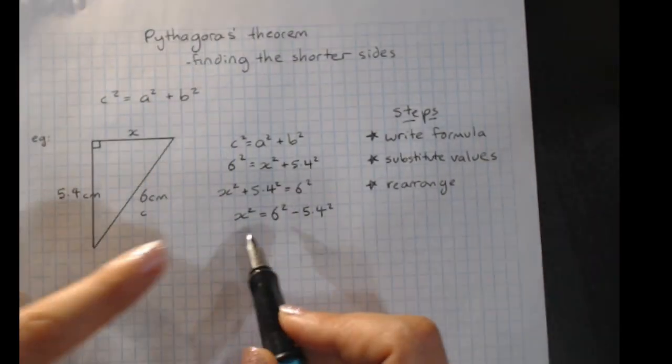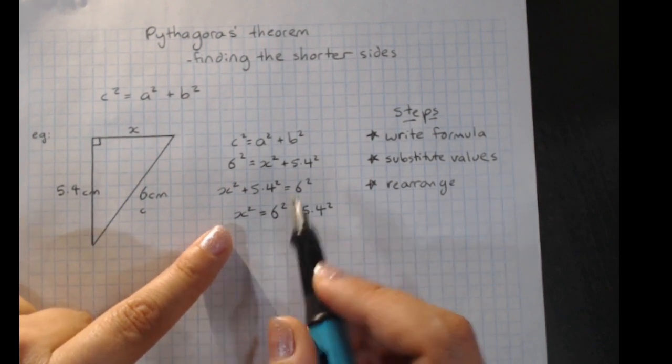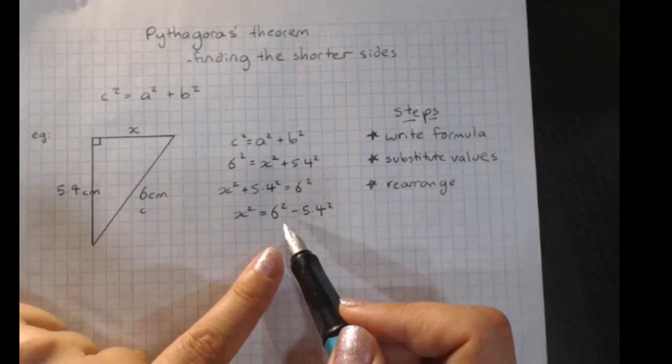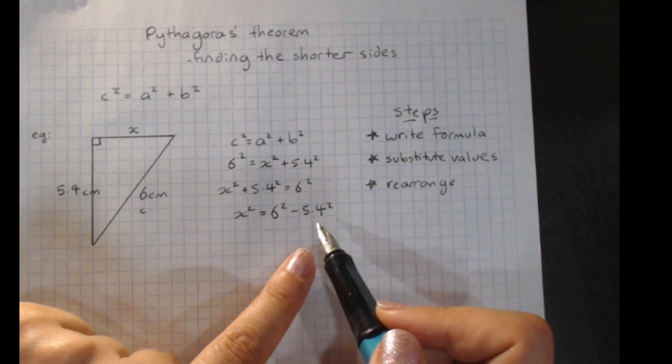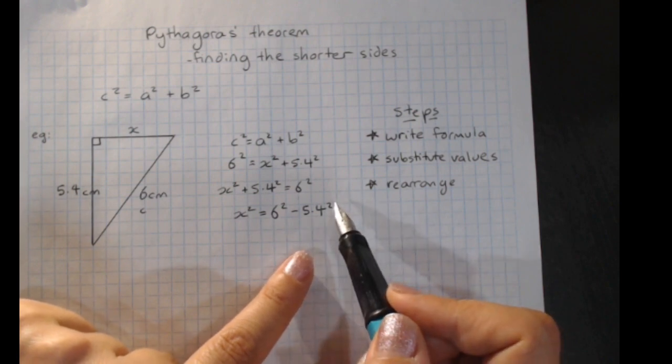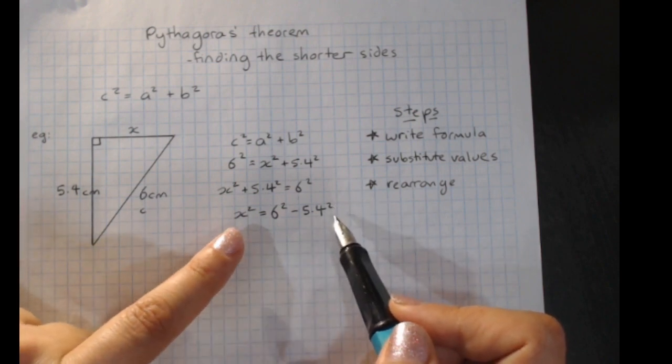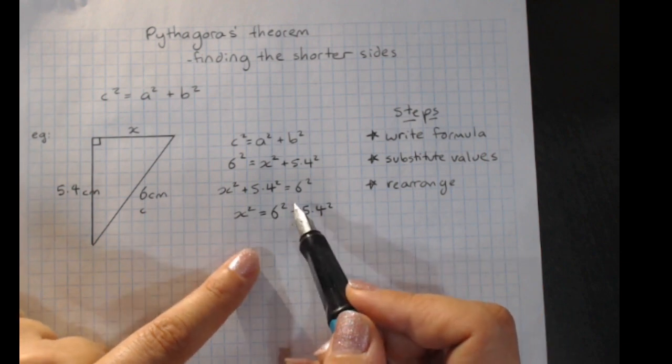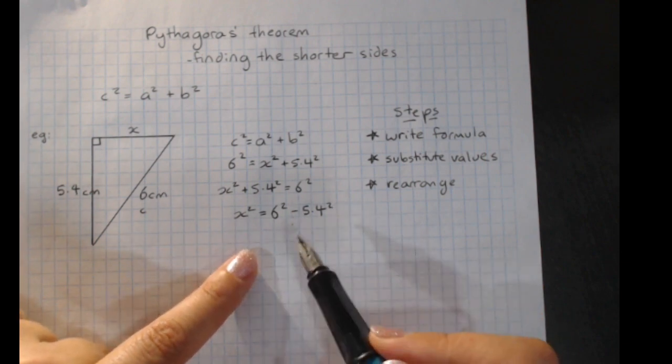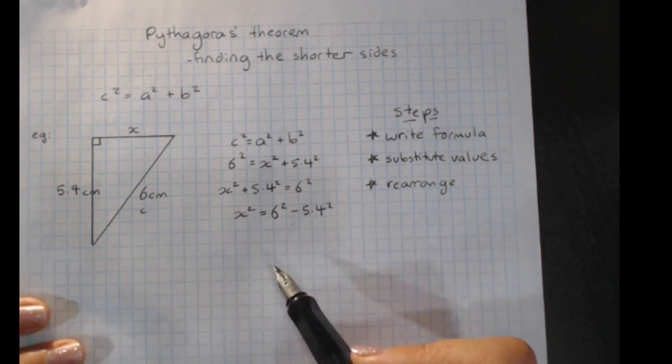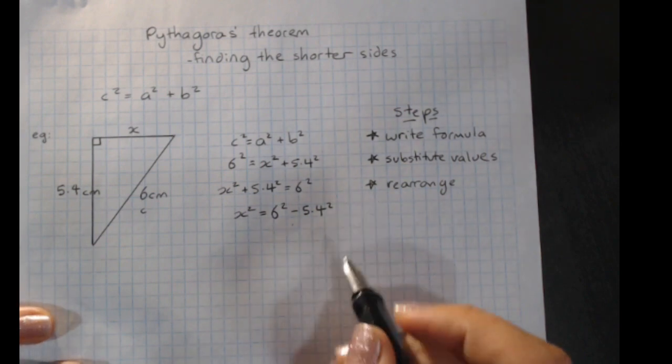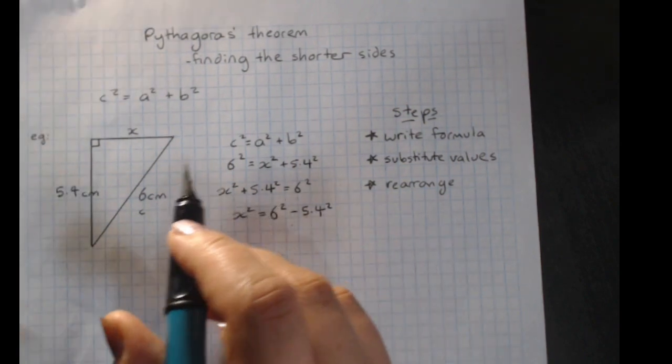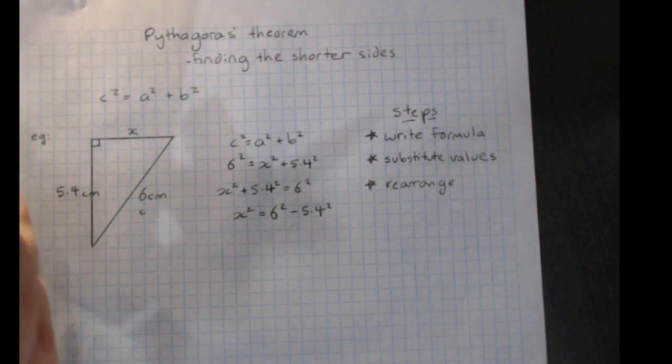So when you're finding one of the shorter sides, it should always work out as the hypotenuse squared minus the other short side squared. So check if you've got to that hypotenuse squared minus the short side squared. For a shorter side, you know you're doing it right. So we'll work out what x squared is by doing that maths there.